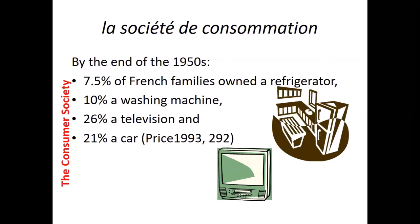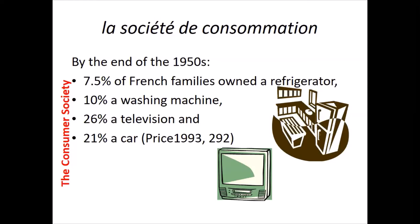The products often referred to as white goods — like washing machines and fridges — began to be manufactured. By the end of the 1950s, from almost zero, 7.5% of French families owned a fridge, 10% owned a washing machine, 26% owned a television, and 21% owned a car — which was really huge. Car ownership has changed enormously over that period.